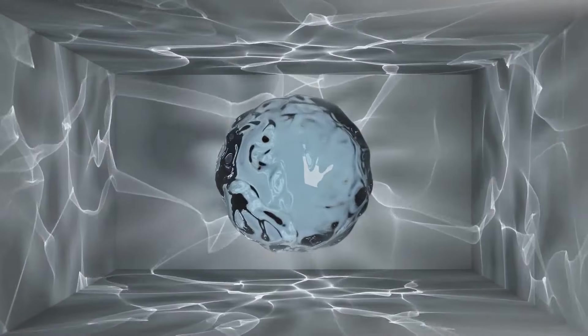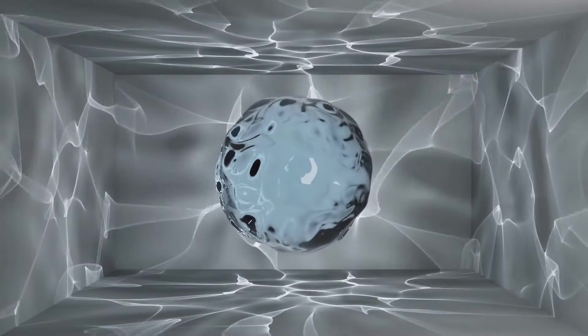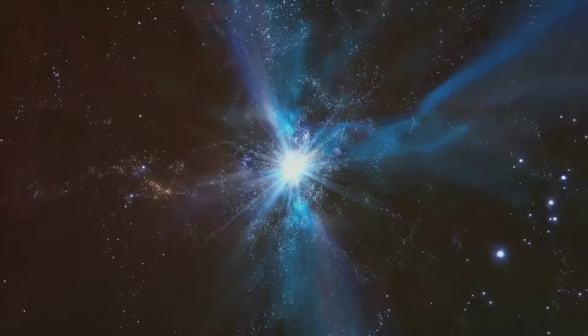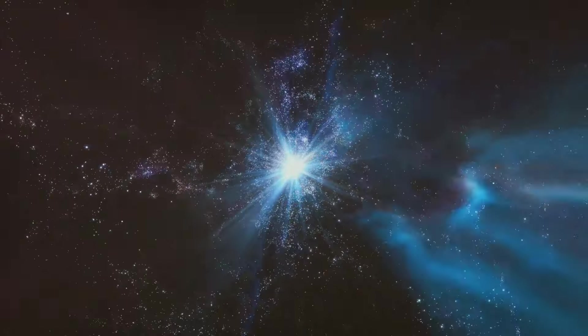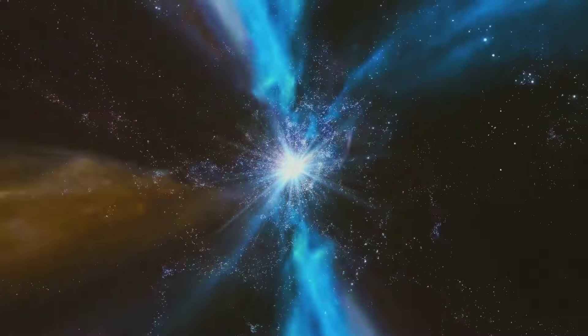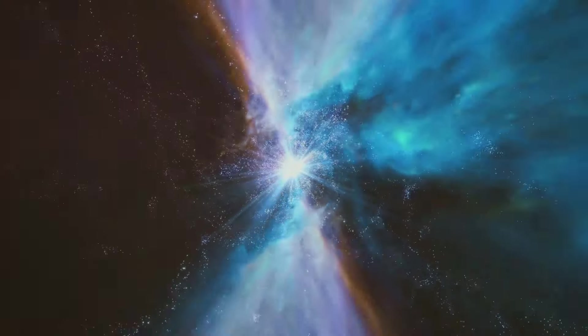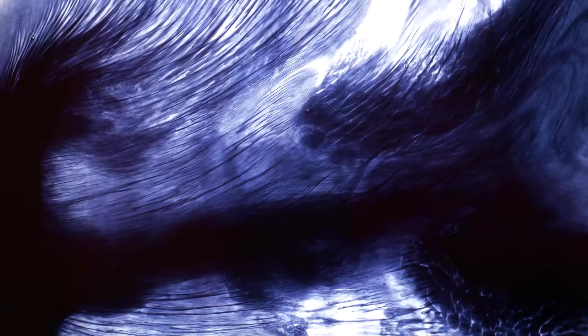The demiurge attempts to recreate this tapestry in the physical world, but the threads are coarse, the colors muted. The result is a world that is beautiful yet flawed, a shadow of the true reality. This imperfect copy represents our world, a pale reflection of the true reality residing in the realm of forms. Our world is a shadow, a dim echo of the perfection that exists beyond.